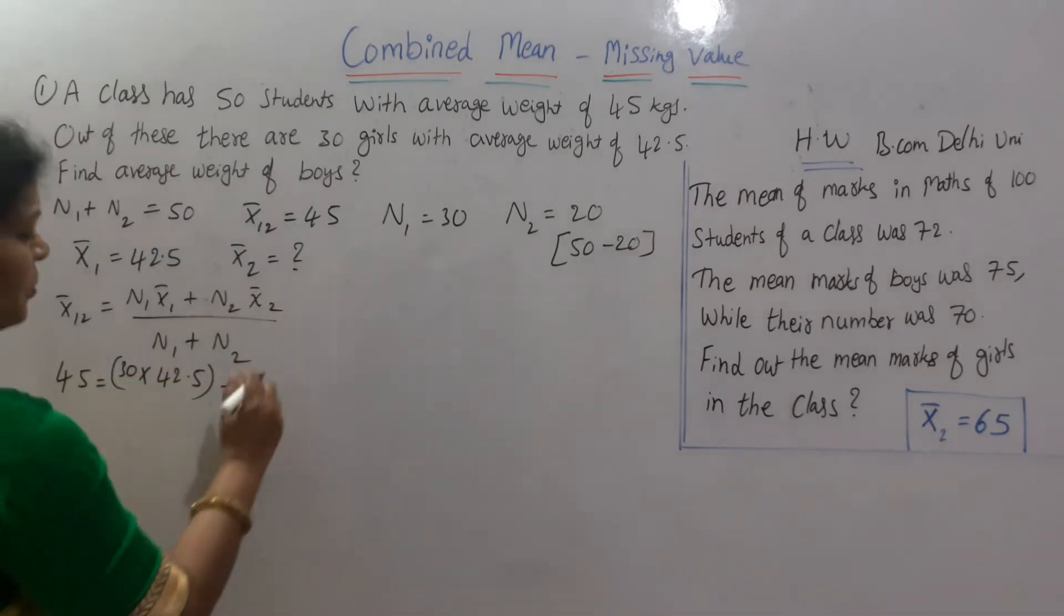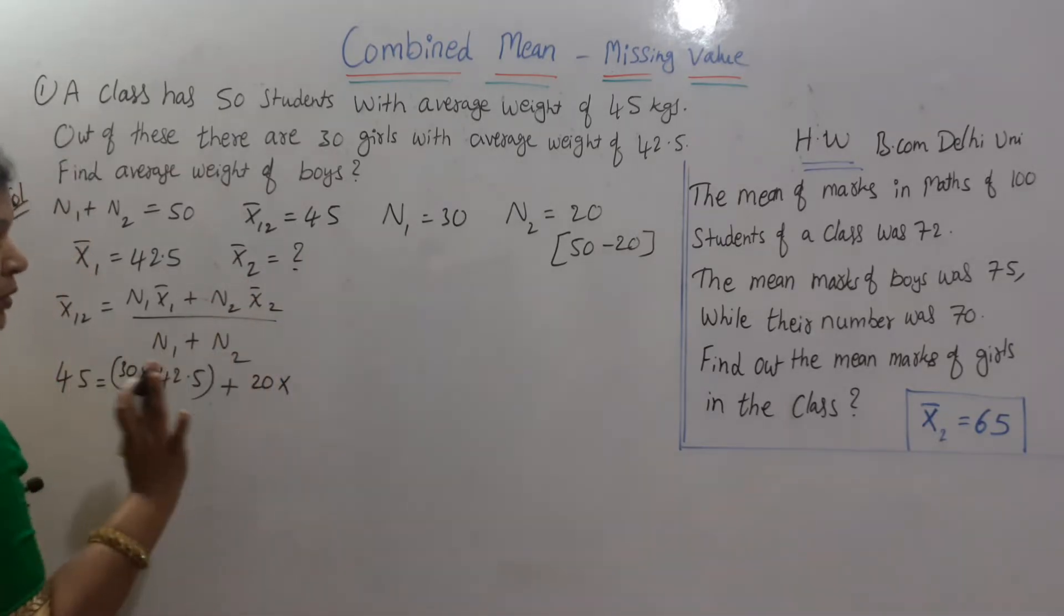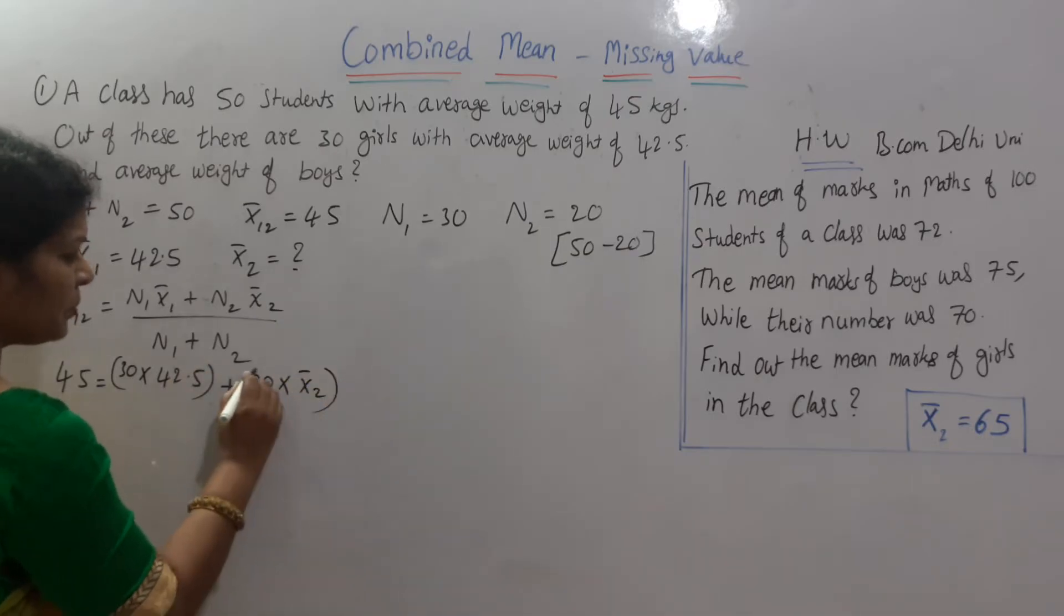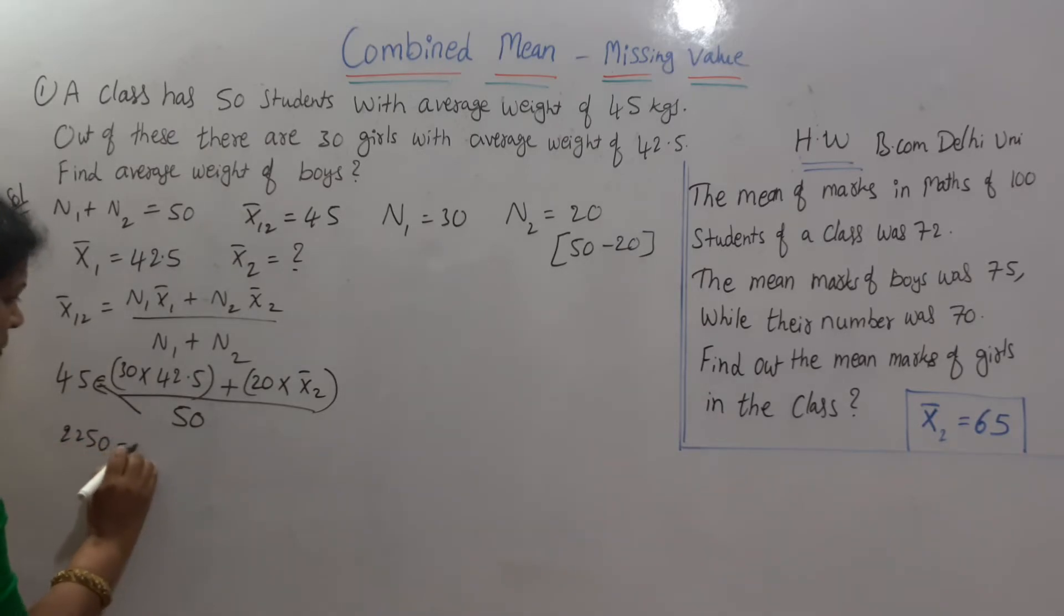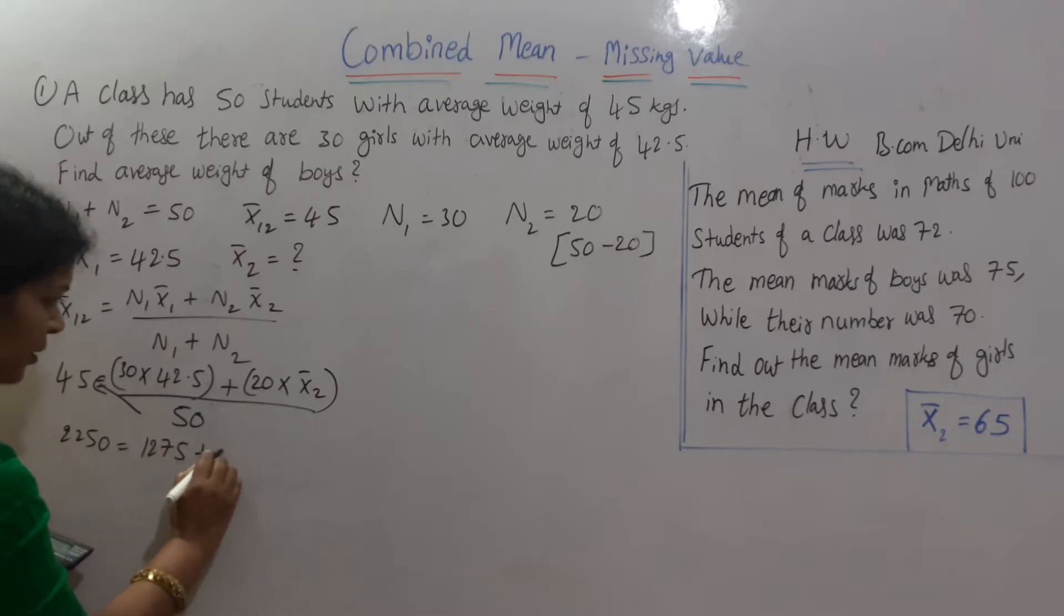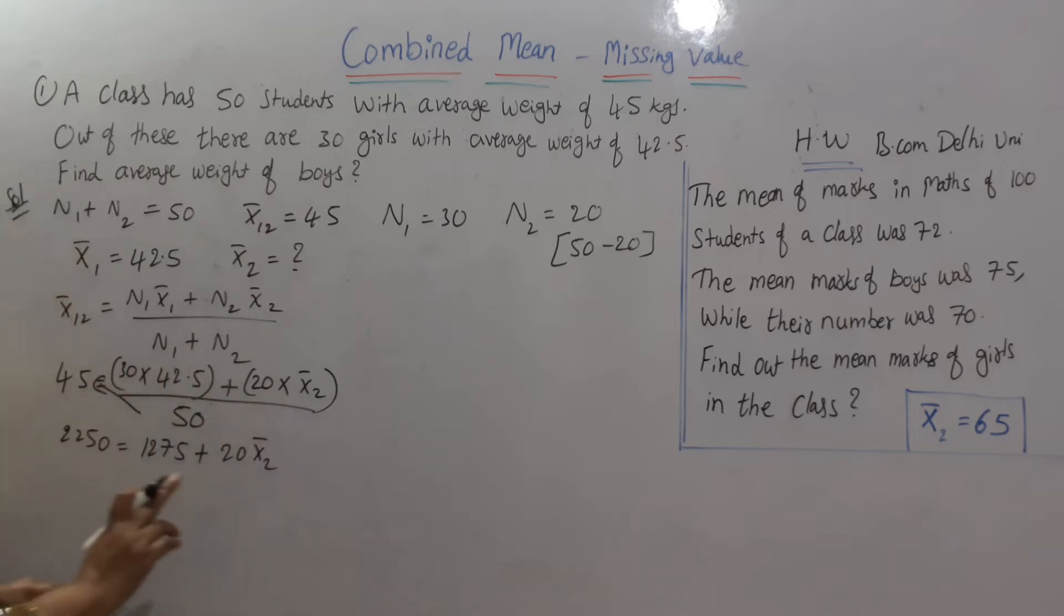Plus N2, N2 is 20, into X bar 2 we do not know. So into X bar 2. So this we are going to calculate by N1 plus N2. N1 plus N2 is here, total number of students is 50. Now calculations, be careful. If we cross multiply this, 45 into 50 comes to 2250. 2250 is equal to this is 30 into 42.5. This is 1275. 1275 plus 20 X bar 2 means 20 X bar 2.